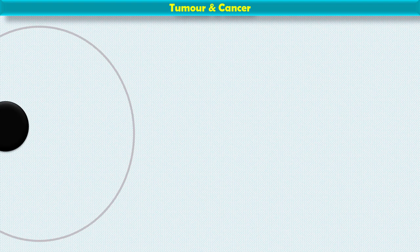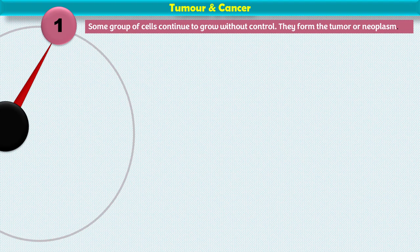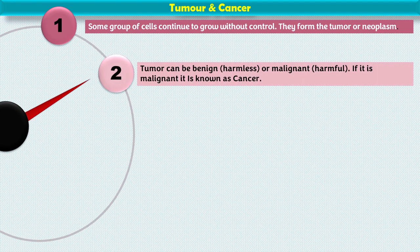Tumor and Cancer. When we have a group of cells that are cut apart, that is called a neoplasm. A tumor can be benign and harmless, or malignant and harmful. A malignant tumor is cancer.